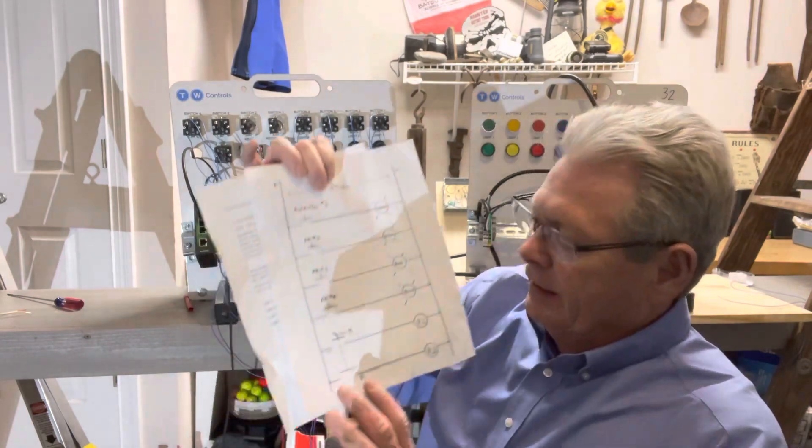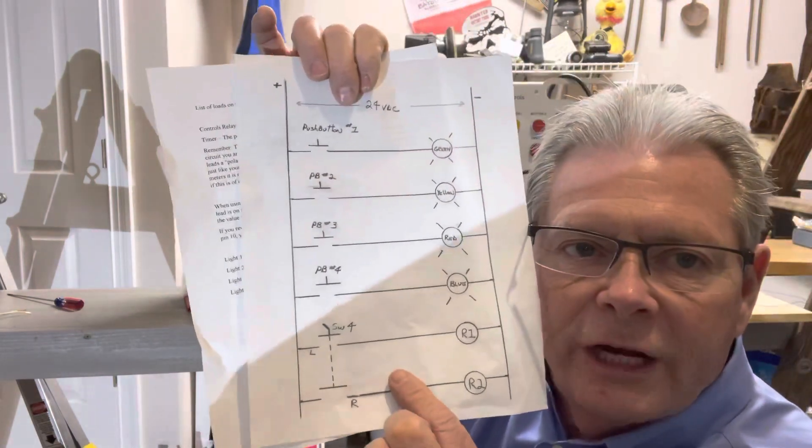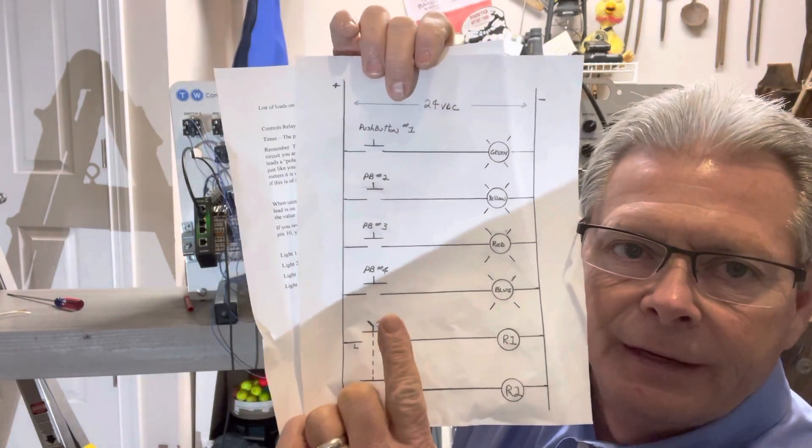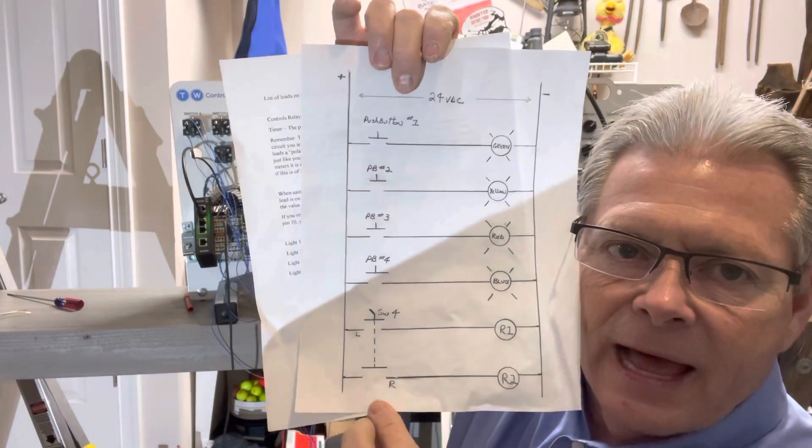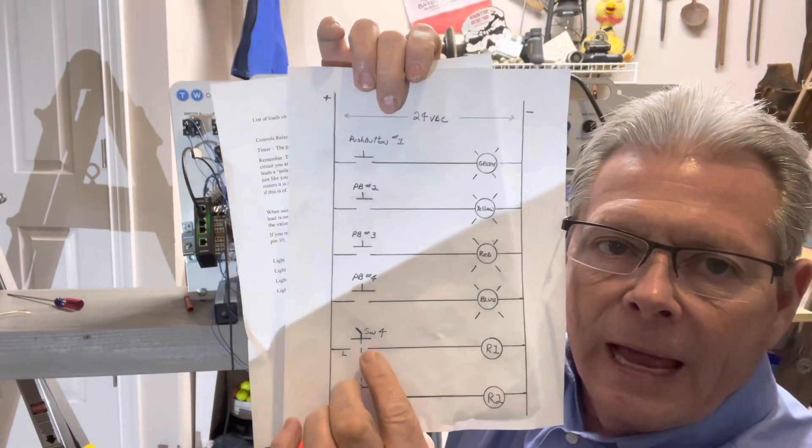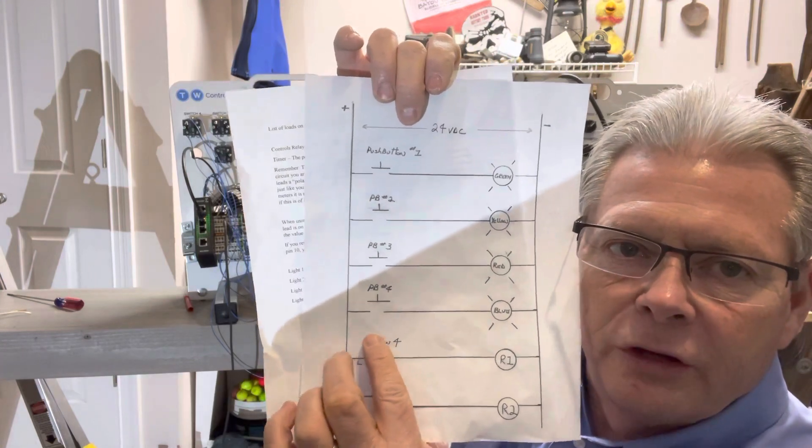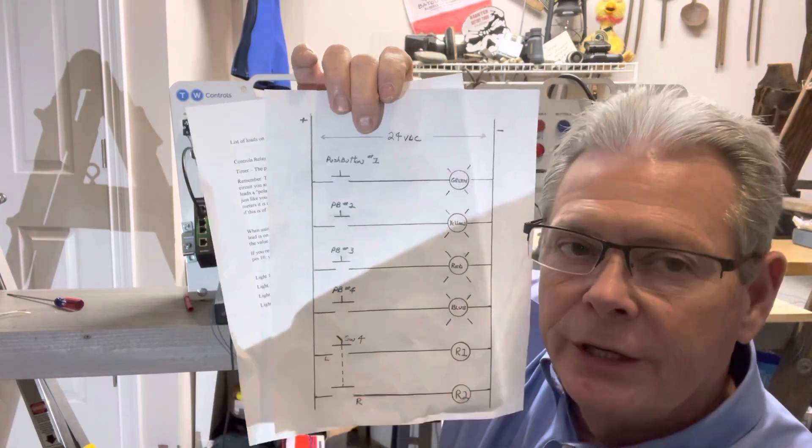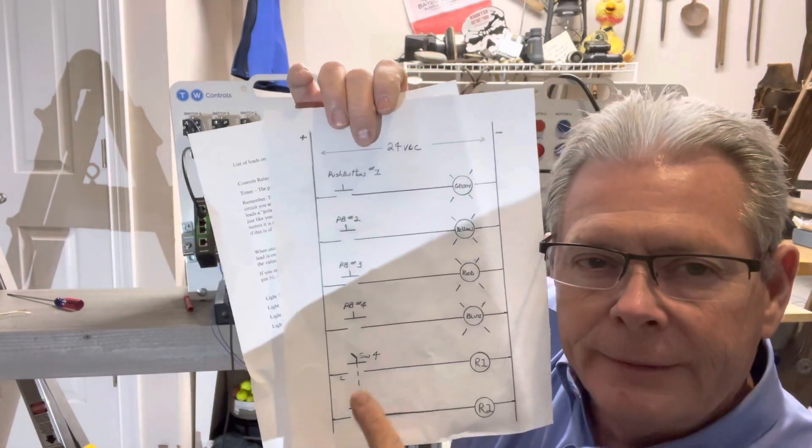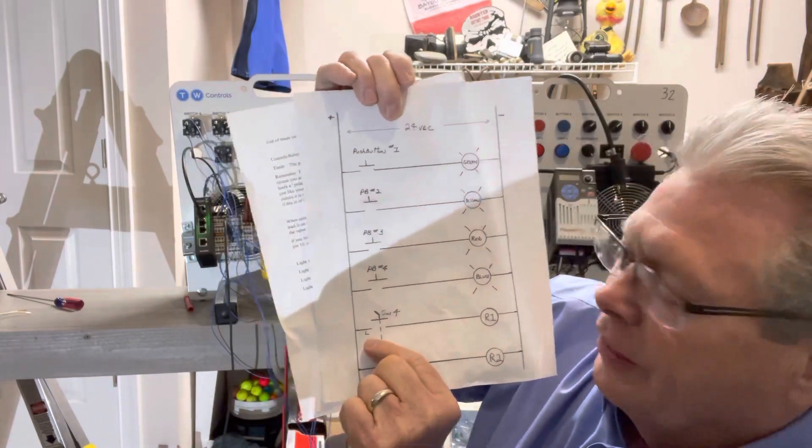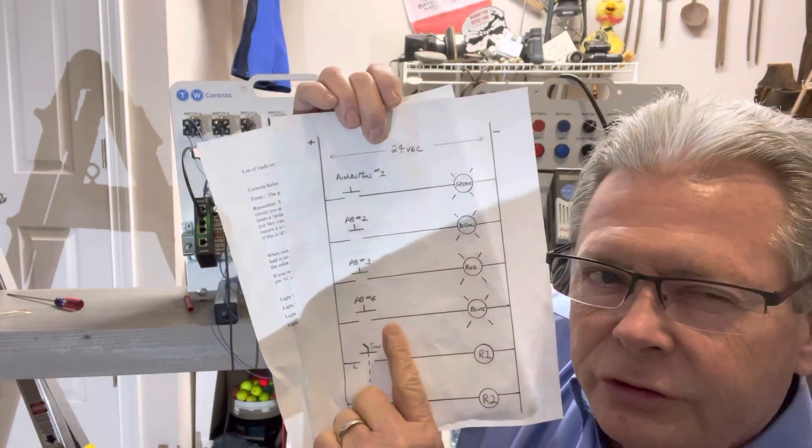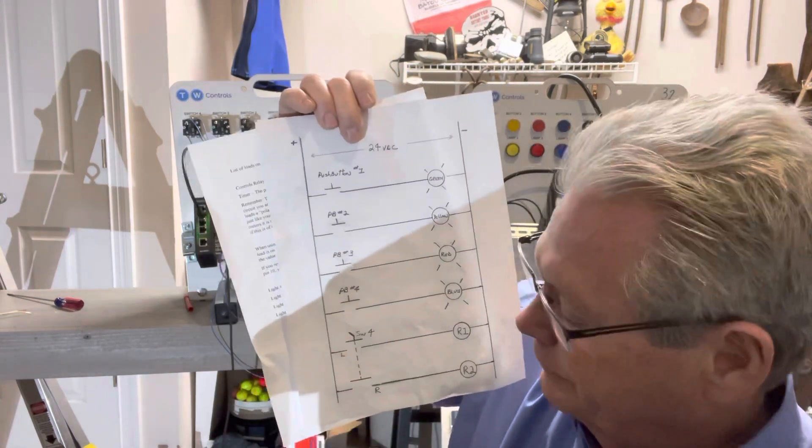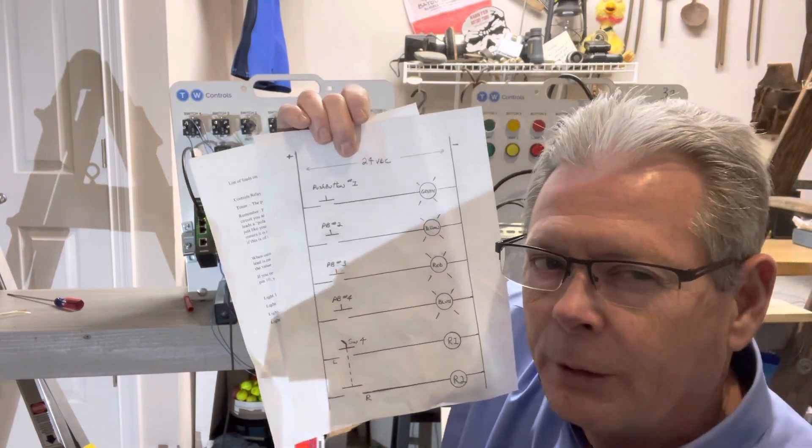Now, the only thing that's left is switch 4. Switch 4 is the selector switch. If you notice on my print, I've got L here and then a dotted line down here and R. A selector switch is different to a push button. This L means when that top of that selector switch is to the left, then this is closed. In the center of its three position, they're both open.